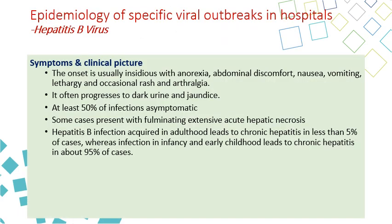The symptoms are usually slow in onset. The first symptoms are anorexia, abdominal discomfort, nausea, vomiting, lethargy, and occasionally rash and arthralgia. Then the patient progresses to dark urine and jaundice, which is yellow discoloration of the eye, and in severe cases the skin. About 50% of cases are asymptomatic. Some few cases can develop fulminating extensive acute hepatic necrosis, which could be fatal.